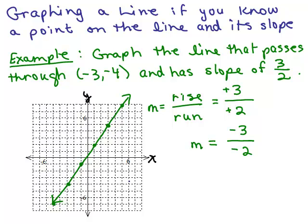One more quick note: you could have written the slope as 6 over 4 — any fraction that reduces to 3 halves works. Starting from negative 3, negative 4, any equivalent fraction for rise over run still lands on the line. For instance, multiplying top and bottom by 3 gives 9 sixths: going over 6 and up 9 reaches the same point. You could even go over 2 feet and up 3 feet — any consistent unit works, though graph paper units are easiest.